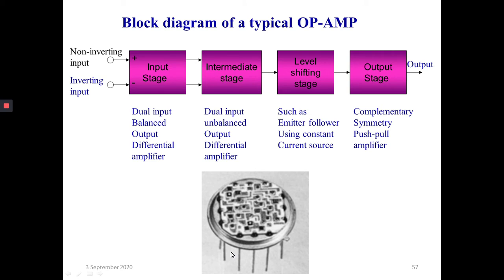This is the block diagram of a typical OP-AMP where the first stage is dual input, balanced output, as I have already discussed in our previous session. An OP-AMP is a direct coupled high gain amplifier. It is called direct coupled because for the coupling purpose, capacitors are not being used, so it is directly coupled from one stage to another.